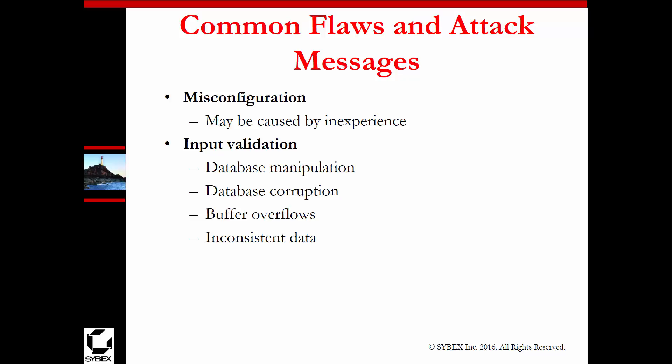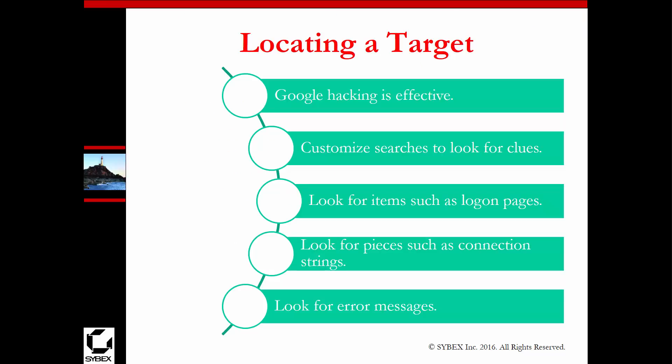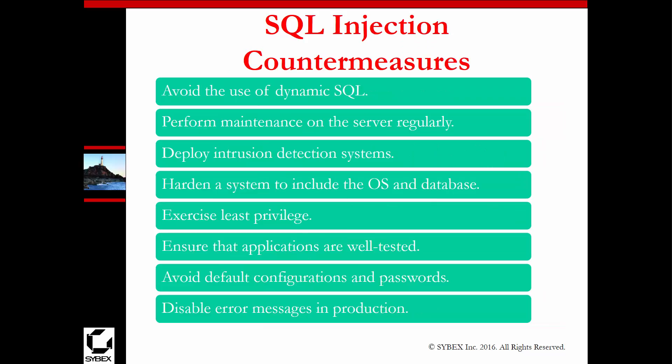Things like data input validation allow us to actually verify the data being inputted and confirm it's valid before we accept it. Basic reconnaissance could involve things like locating a target — that's more the reconnaissance and enumeration we've already talked about.